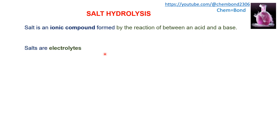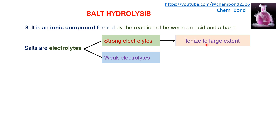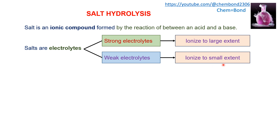Salts are electrolytes. Electrolytes are species which will split into ions by the passage of electricity. Some salts are strong electrolytes, meaning they produce ions to a large extent, while weak electrolytes produce ions to a smaller extent.